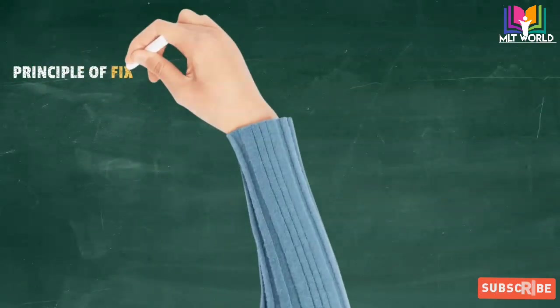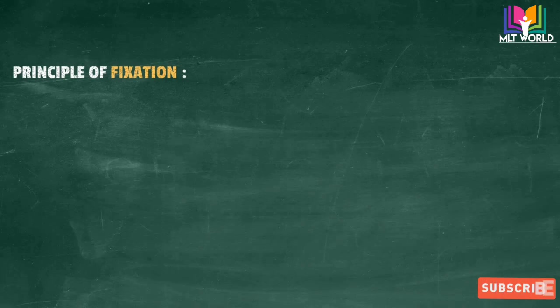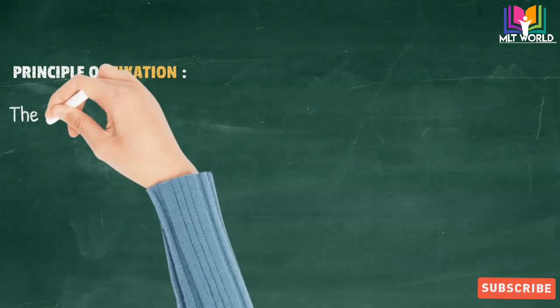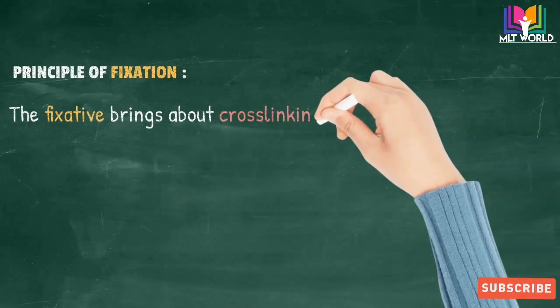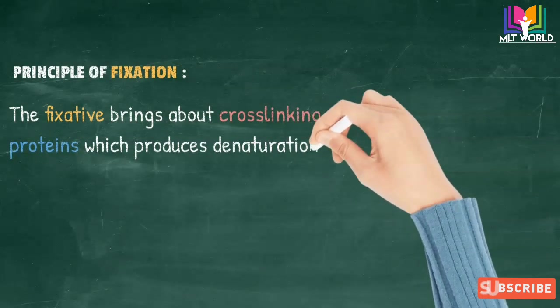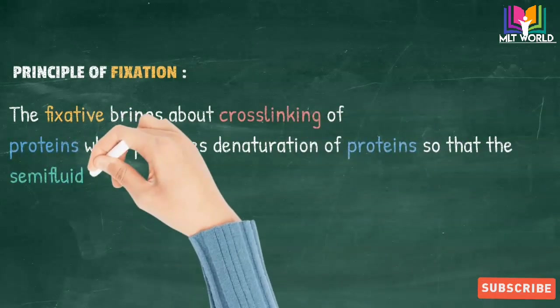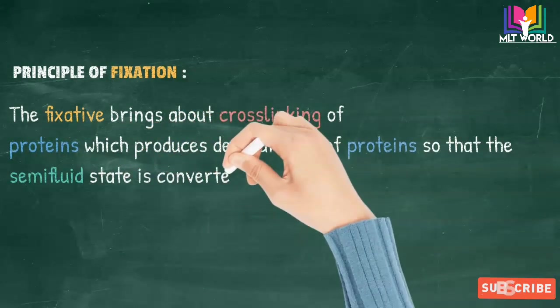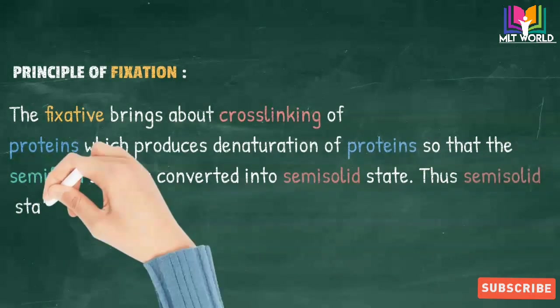The principle of fixation: most fixatives act by denaturing proteins which then form a meshwork to hold other constituents. Fixatives bring about the cross-linking of proteins which produces denaturation of proteins, so that the semi-fluid state is converted into a semi-solid state, facilitating easy fixation of tissue.